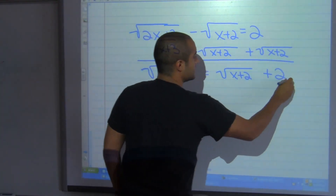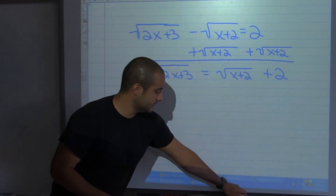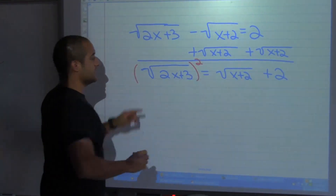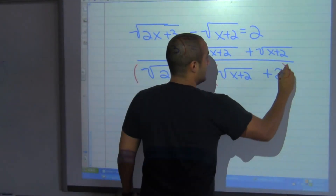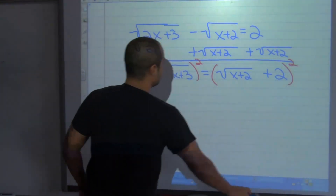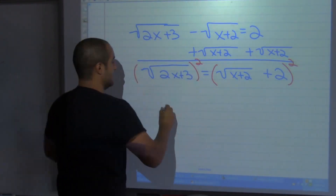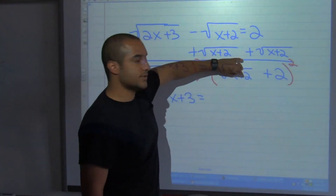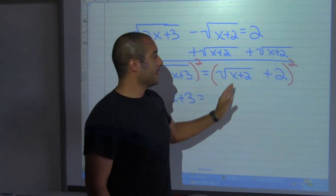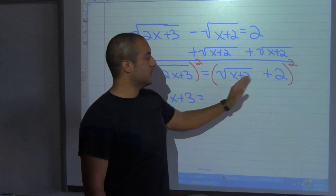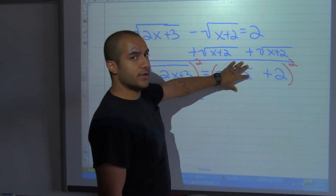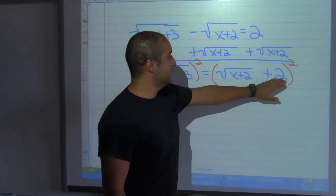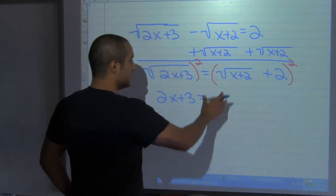From here I'll square both sides, because this is a square root and I want to get rid of it. On the left side it goes away, so I just have 2x plus 3. On the right side, remember the shortcut for squaring two terms: a squared plus 2ab plus b squared.